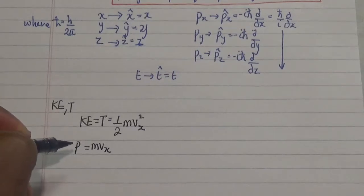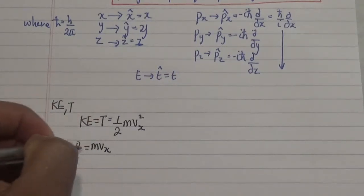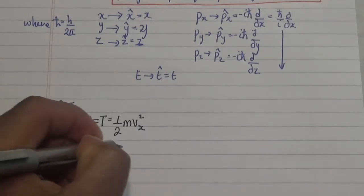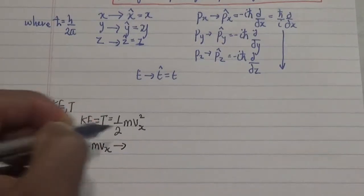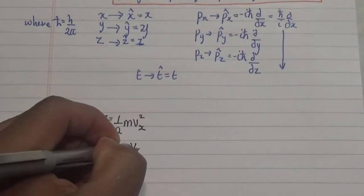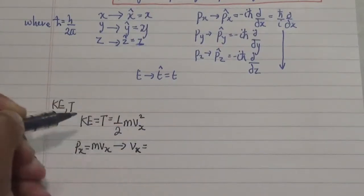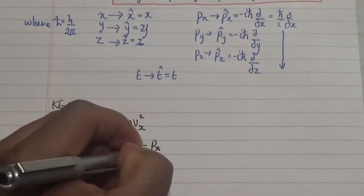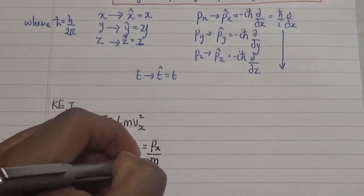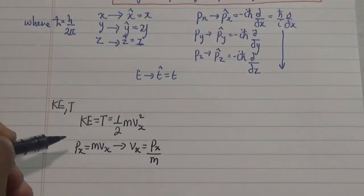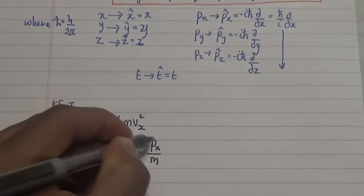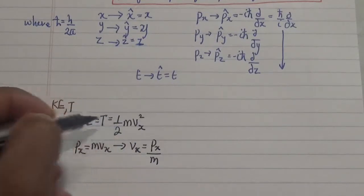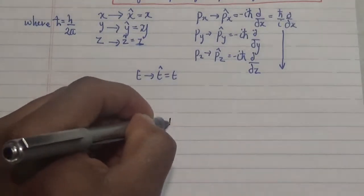Now we need to be able to solve for the velocity. So the velocity is equal to the momentum in the x coordinate divided by the mass of that particular object.